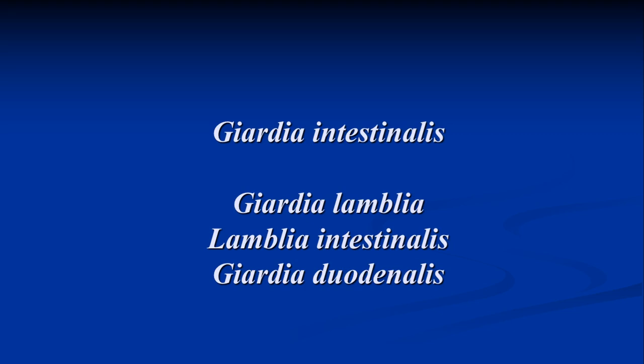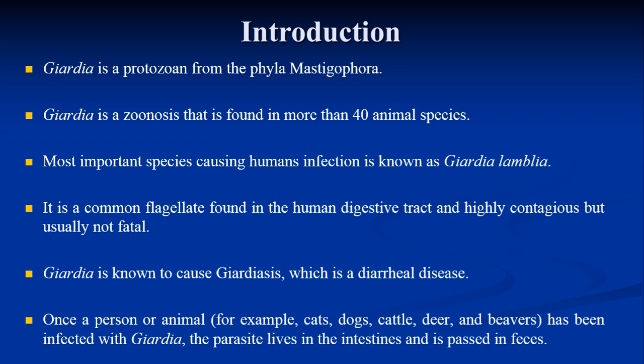Today we are going to discuss one more parasite: Giardia intestinalis or Giardia lamblia. It is also known as Lamblia intestinalis and Giardia duodenalis, but right now it is popular with the name Giardia lamblia. Giardia is a protozoa from phylum Mastigophora. It is a zoonotic disease and a common flagellate found in the human digestive tract, highly contagious but usually not fatal. Giardia is known to cause giardiasis, which is a diarrheal disease.